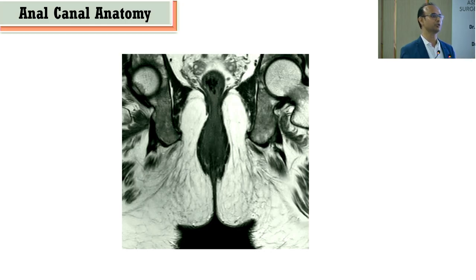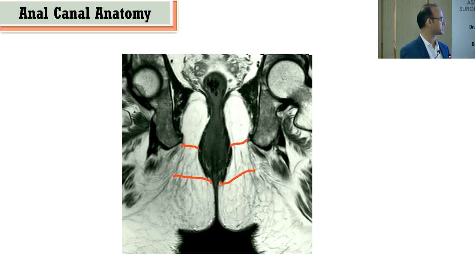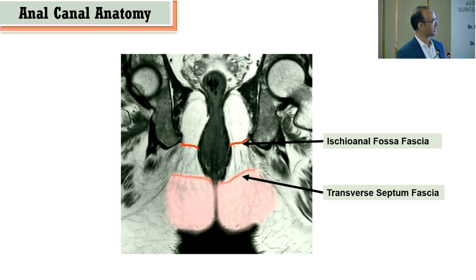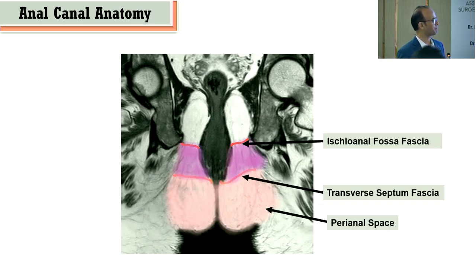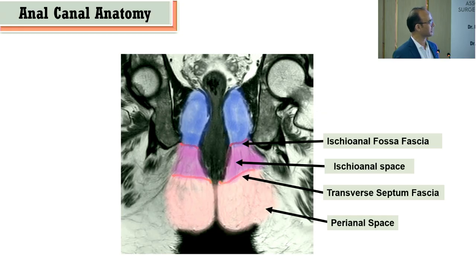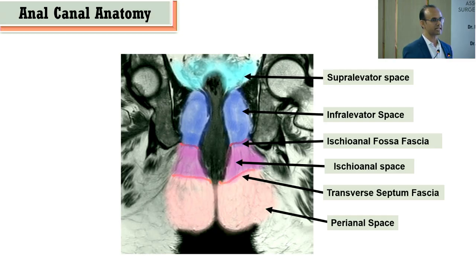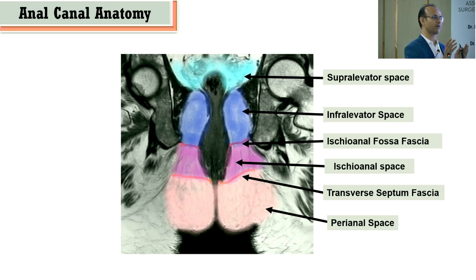After identifying the sphincter, we examine the surrounding spaces. A transverse fascia septum and ischiorectal fossa fascia divide the spaces: the lower is perianal, the second is ischiorectal space, above is infra-levator, and above the levator on coronal view is the supra-levator space. These four lateral spaces, combined with identifying internal and external sphincters, allow us to find most pathology and plan treatment — even for abscess cases on the operating table.